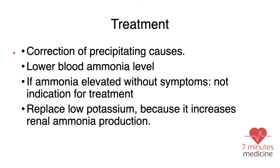The first line of treatment is to correct the precipitating factor — for example, if the patient has an infection, treat the infection. The second step is to lower the blood ammonia level. Importantly, if ammonia is elevated without symptoms in a patient with liver cirrhosis but no encephalopathy, there is no indication for treatment. It is also important to replace low potassium, because hypokalemia increases renal ammonia production, which can worsen hepatic encephalopathy.